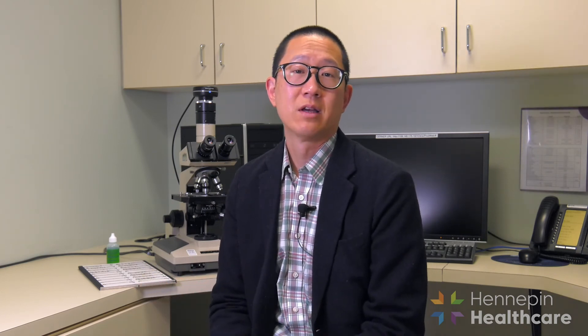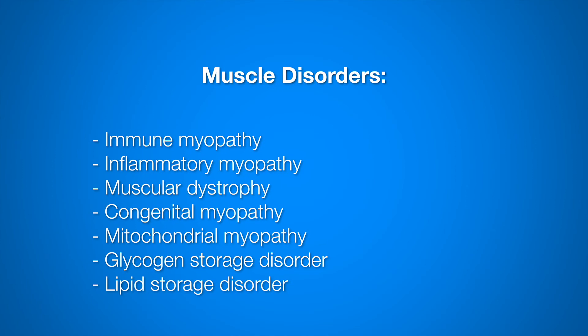Our different stains help us tease out a lot of different characteristics of muscle. We look at muscle fiber size, shape, and internal architecture, and then the various different stains help tease out different types of muscle disorders such as immune myopathy, inflammatory myopathy, muscular dystrophy, congenital myopathy, mitochondrial myopathy, storage disorders such as glycogen or lipid storage disorders, and so forth.